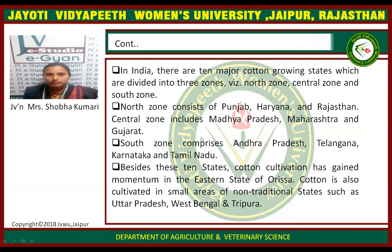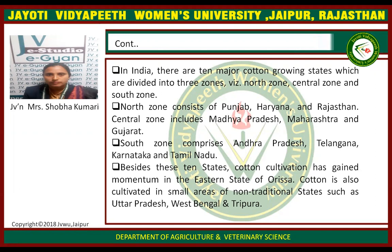In India, there are 10 major cotton growing states which are divided into 3 zones: North zone, Central zone, and South zone. North zone consists of Punjab, Haryana, and Rajasthan. Central zone includes Madhya Pradesh, Maharashtra, and Gujarat. South zone comprises Andhra Pradesh, Telangana, Karnataka, and Tamil Nadu. Besides these 10 states, cotton cultivation has gained momentum in the state of Odisha. Cotton is also cultivated in small areas of non-traditional states such as West Bengal and Tripura.